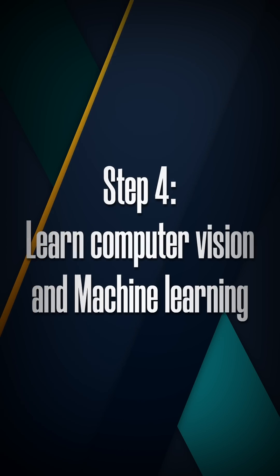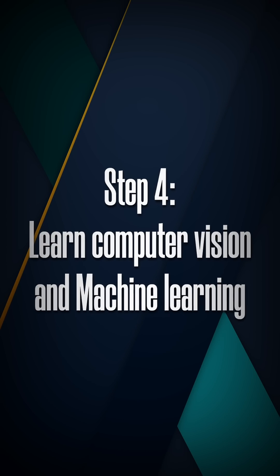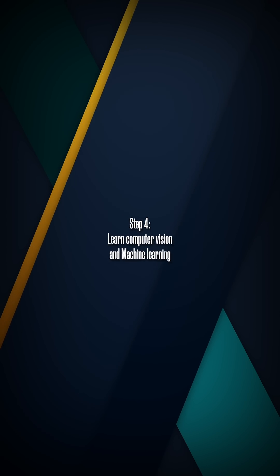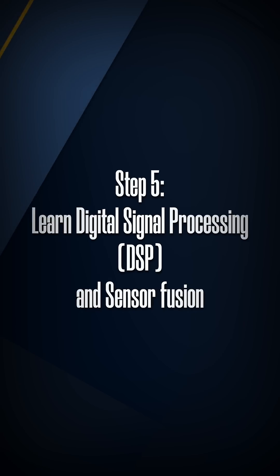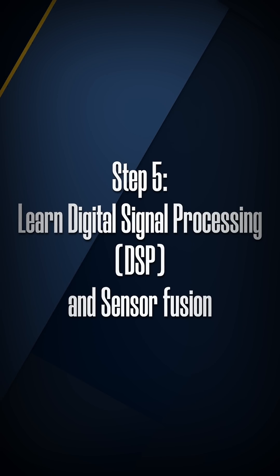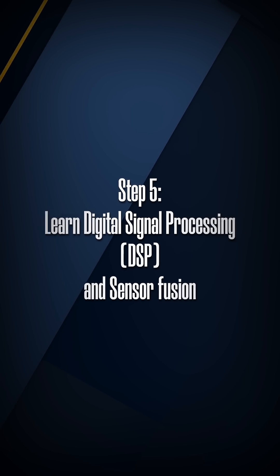Step four: learn computer vision and machine learning. Computer vision and machine learning are essential for perception. Step five: learn digital signal processing, or DSP.